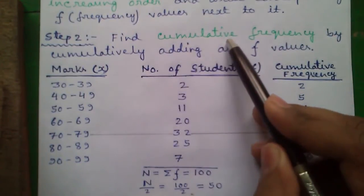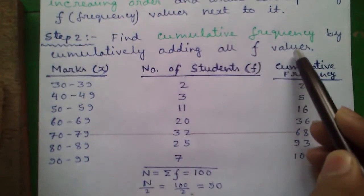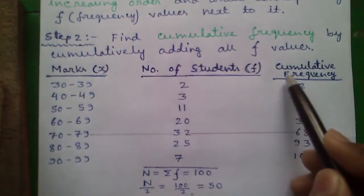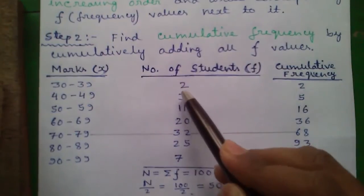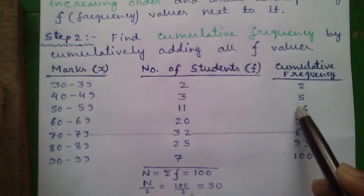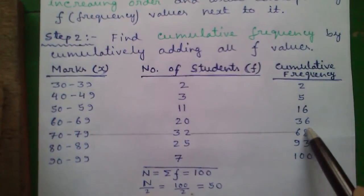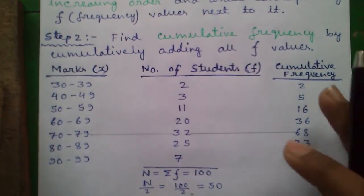Step 2: Find the cumulative frequency by cumulatively adding all f values. That means write the first f value in cumulative frequency column and then 2 plus 3 is 5, 5 plus 11 is 16, 16 plus 20 is 36, 36 plus 32 is 68, 68 plus 25 is 93, 93 plus 7 is 100. So that's the cumulative frequency column.